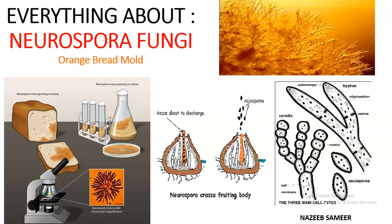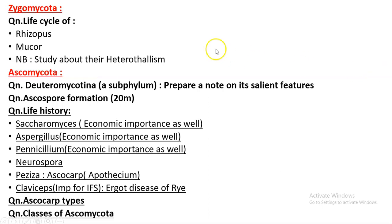Hello, we continue to do the survey of fungi module. Today's agenda will be Neurospora fungi, which is coming under Ascomycota. Under the fungi module, we have to see Zygomycota — we have already completed it through Rhizopus and Mucor life cycle. Under Ascomycota, we have finished Saccharomyces, Aspergillus, Penicillium, and today's agenda will be Neurospora.